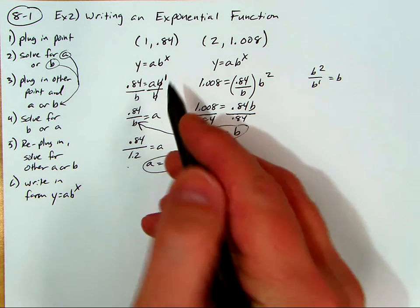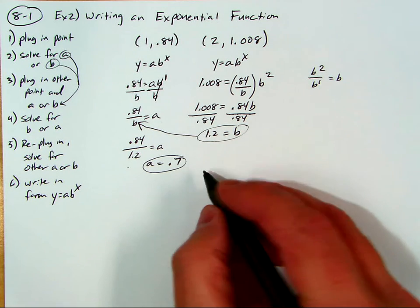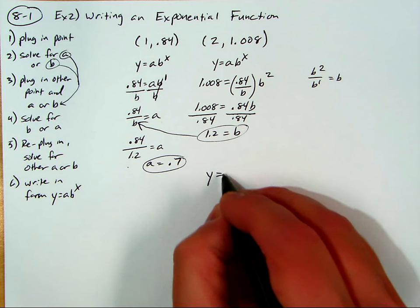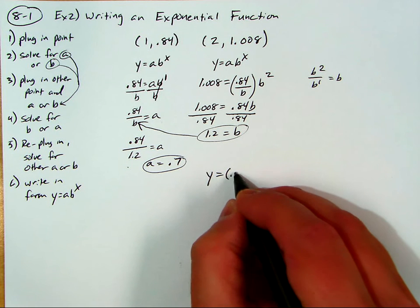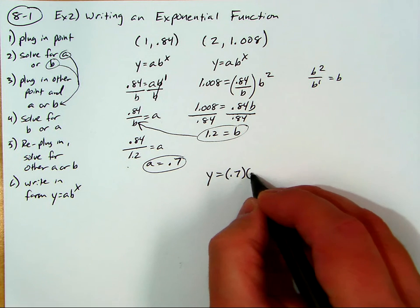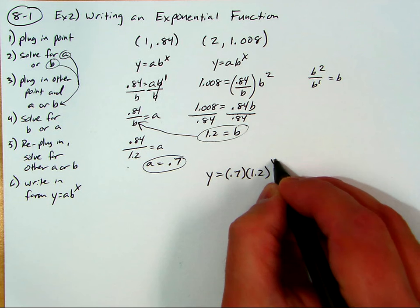So now I can use those and write them in the general form as the exponential. So it's y equals a, 0.7, b, 1.2 to the x power.